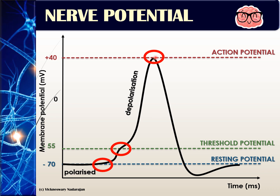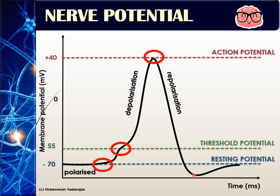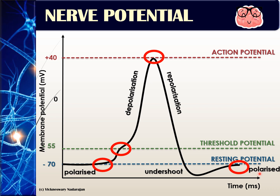After the nerve has done its job, it must return to being negative again. To do that, it carries out repolarization. However, it becomes more negative than it should be — for example, it may go down to negative 90. That is called undershoot. The nerve will then return to its normal resting potential and become polarized to receive a new impulse.